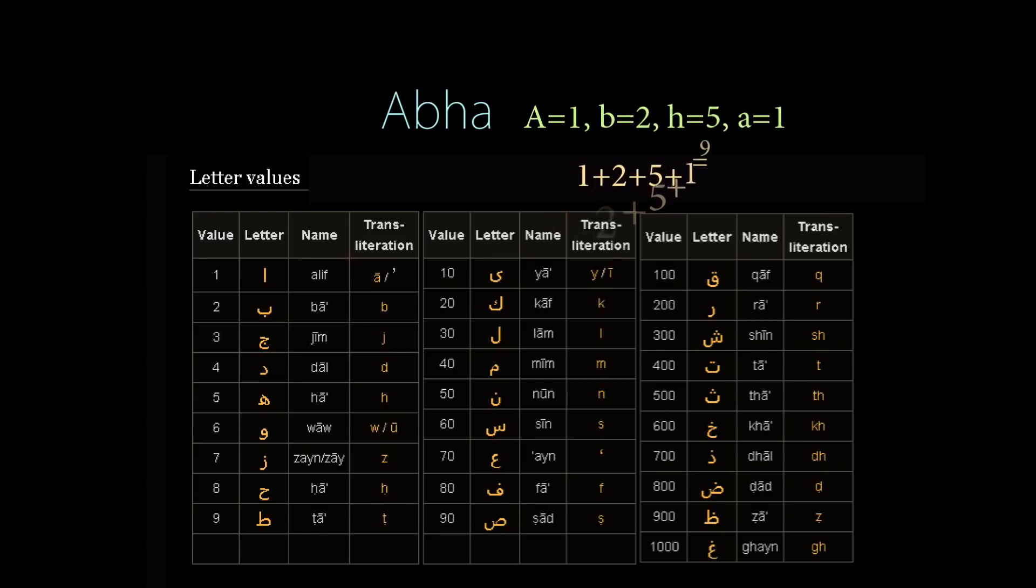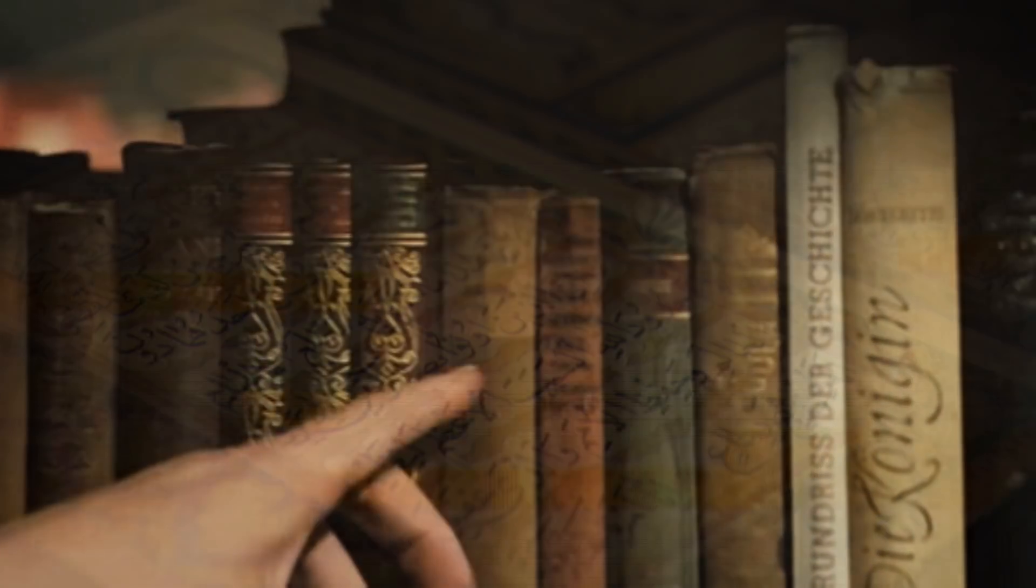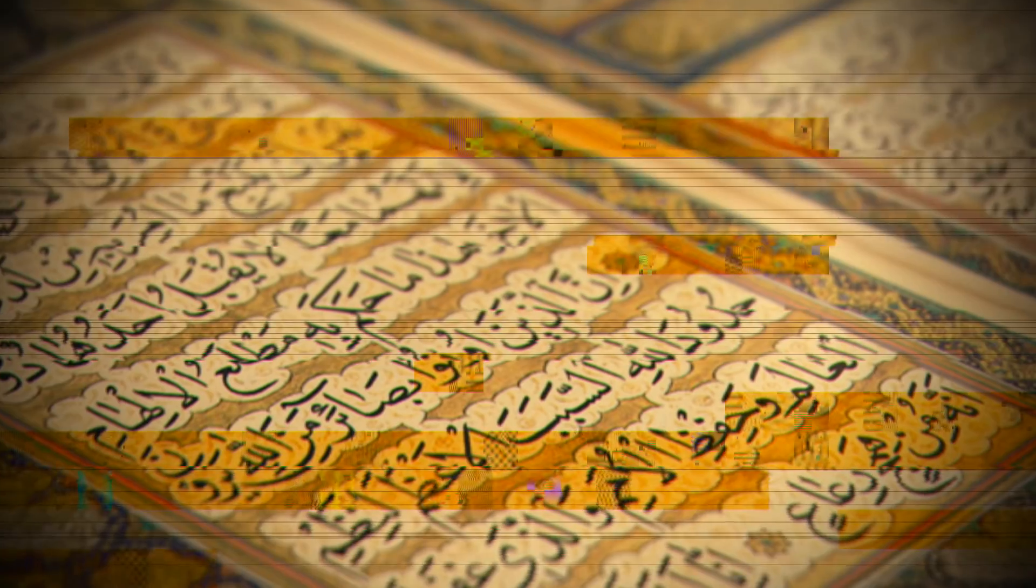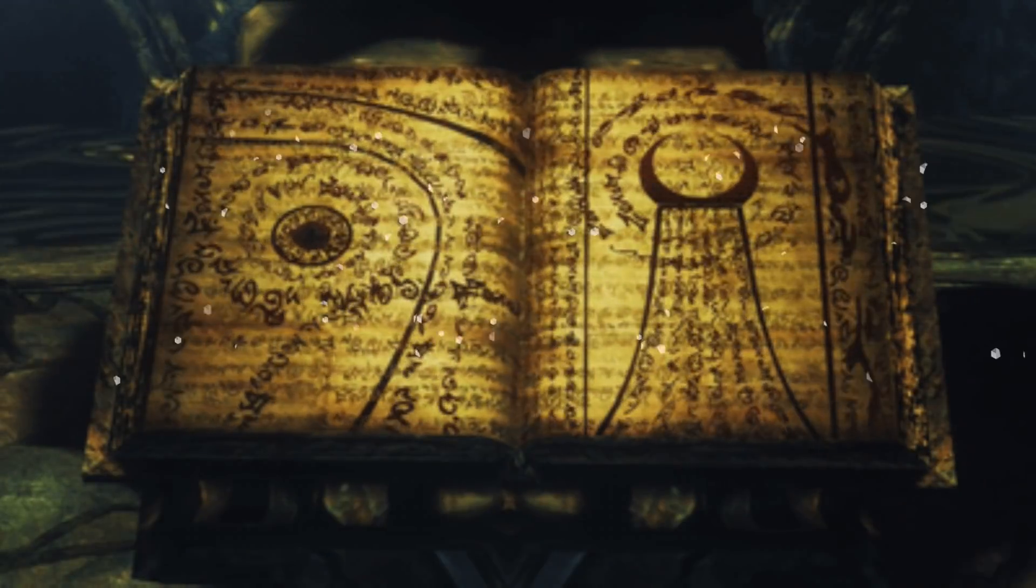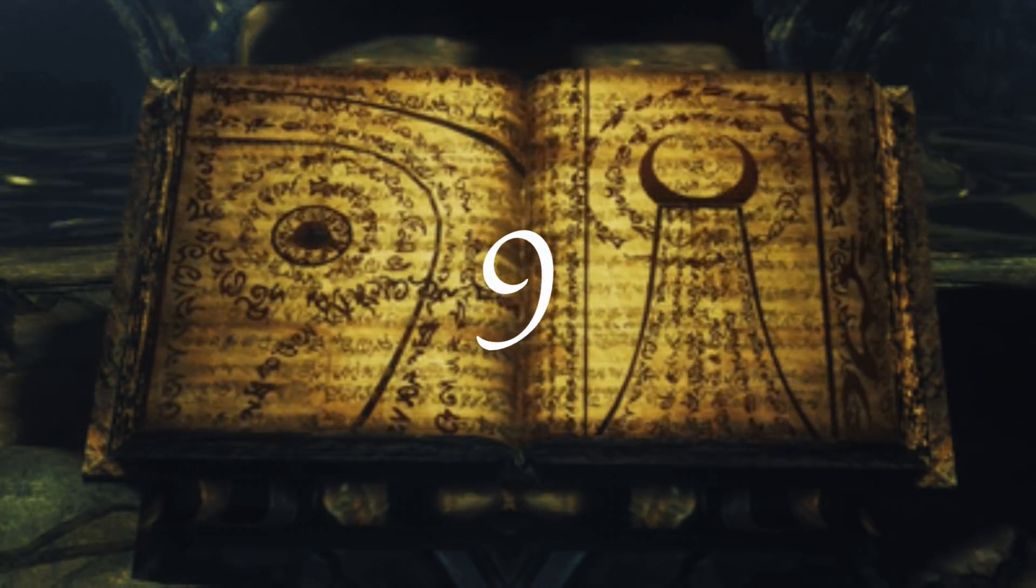What Marco discovered was that A equals 1, B equals 2, H equals 5, A equals 1. Add all the numbers together, and you get 9. The fact that the Most Great Name of God equaled 9 seemed very important to him, as everything he had read in both the Baha'i scriptures and other religion texts spoke of 9 being the omnipotent number.